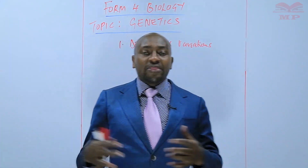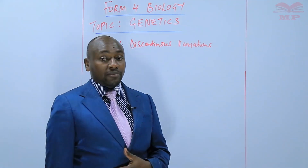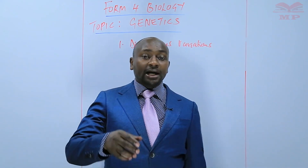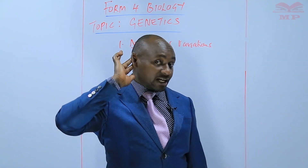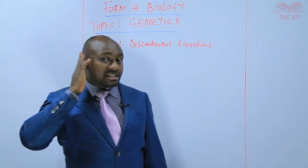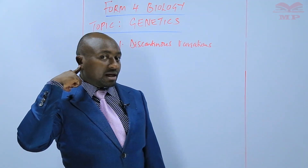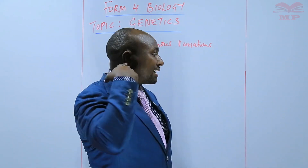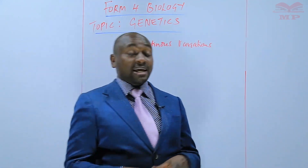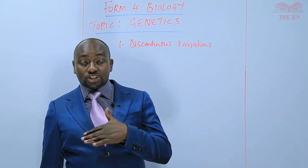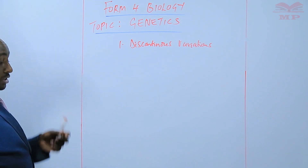There are no intermediates — you have either a specific blood group or another. Also the earlobe: there are those people who have a free earlobe that is detached from the body, and there are those who have an earlobe that is attached. It is either you have a free earlobe or an attached earlobe. All those examples are examples of discontinuous variations.